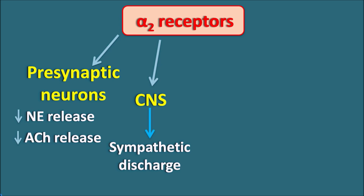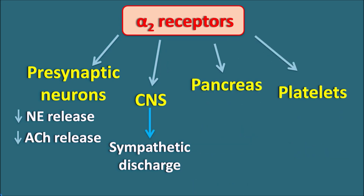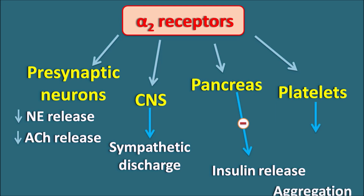Apart from their actions on neurons, alpha-2 receptors are also present at two other locations: the pancreas and platelets. Pancreatic beta cells release the important hormone insulin, and since alpha-2 receptors are auto-inhibitory in nature, they inhibit exocytosis. Within the pancreas, alpha-2 receptors decrease insulin release, thereby increasing glucose levels in the body. This means the sympathetic system can elevate glucose levels by increasing hepatic glucose production through alpha-1 receptors and by inhibiting insulin release from the pancreas through alpha-2 receptors. Alpha-2 receptors can also produce an inhibitory effect on platelets and inhibit platelet aggregation.